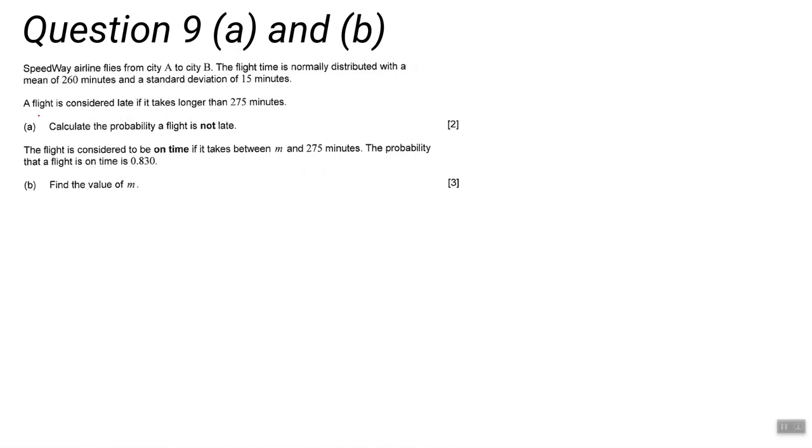When we've got a normal distribution question, I would strongly advise that the first things you do are write down the distribution of the variable. So we know that X is distributed normally, the mean it tells us is 260 and the standard deviation 15. So the normal distribution is N(260, 15²). Remember it's the variance we put in there, there's no need to square 15, you can just write it as 15². That's a very common thing to do.